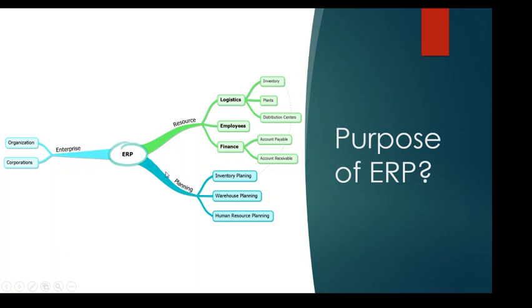These resources are also subject to planning. For example, companies do planning for inventory, warehouse operations, and human resources. All of those aspects together are what we call ERP, and SAP is the ERP system that manages them.